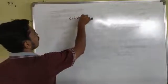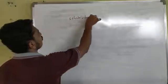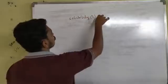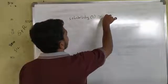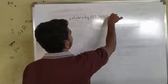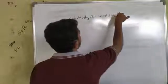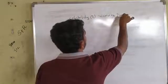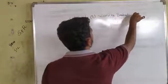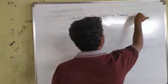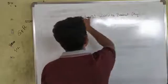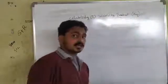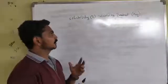Solubility is denoted by the capital letter S. Solubility Product is denoted by Ksp — that is K, S, P. We will now discuss the relation between Solubility (S) and Solubility Product (Ksp).